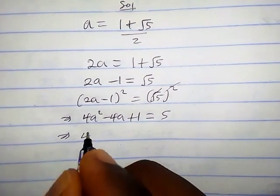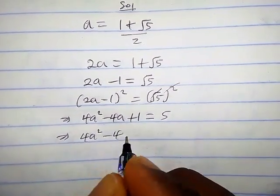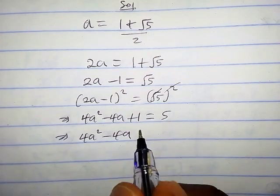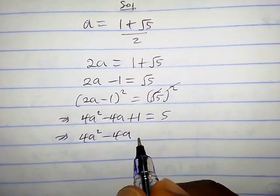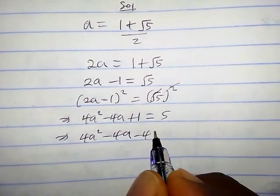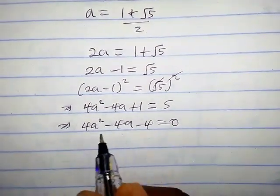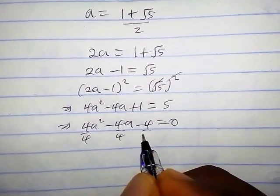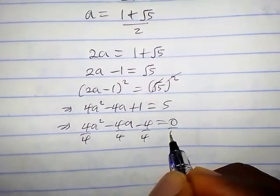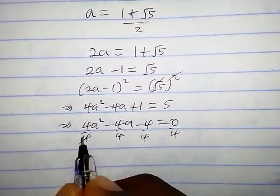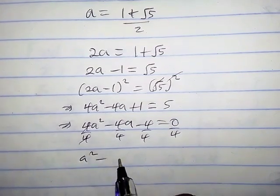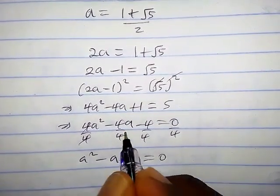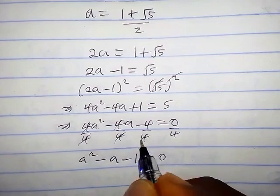Let's write this equation again. We have four a squared minus four a, and moving five to the left gives one minus five, that is minus four, equals zero. Dividing both sides by four gives us a simplified equation.